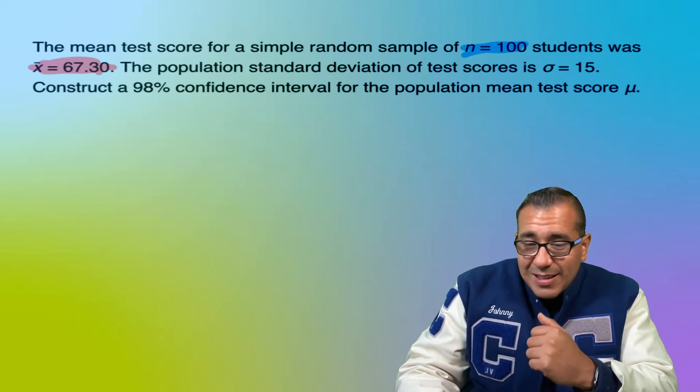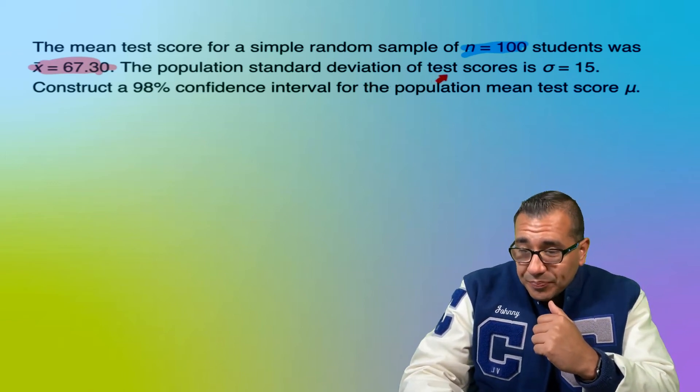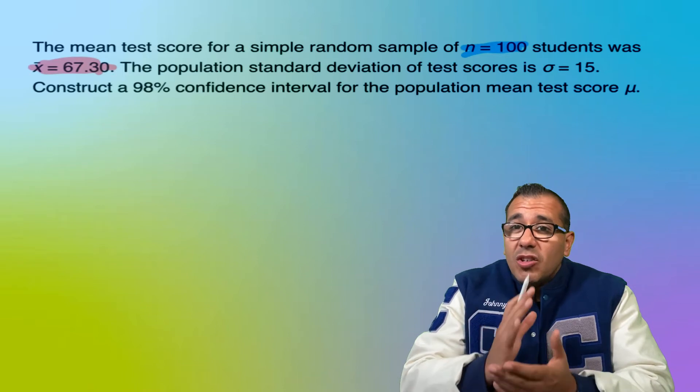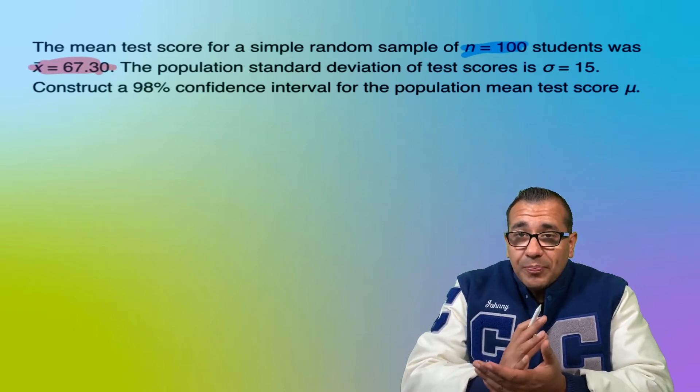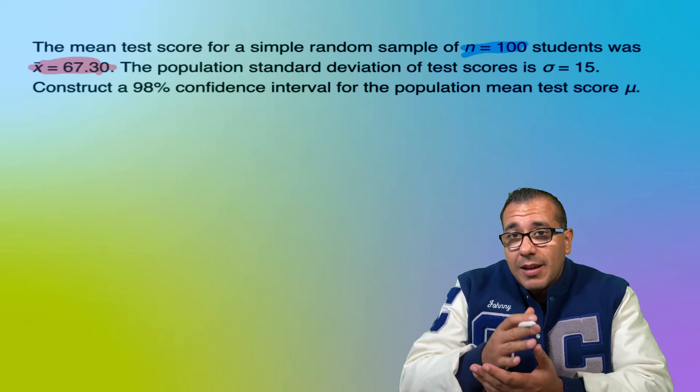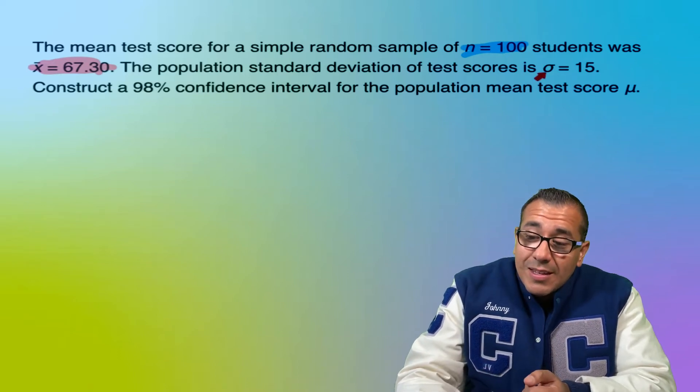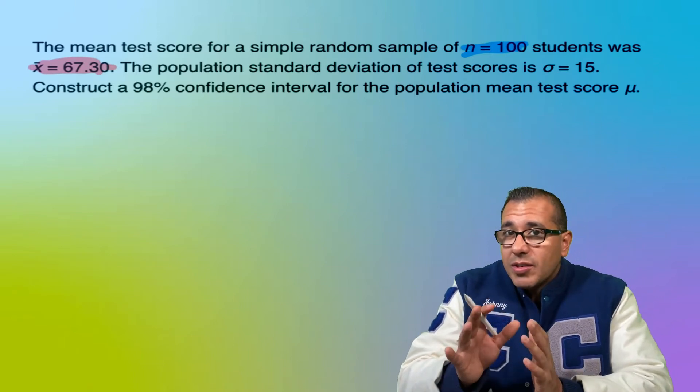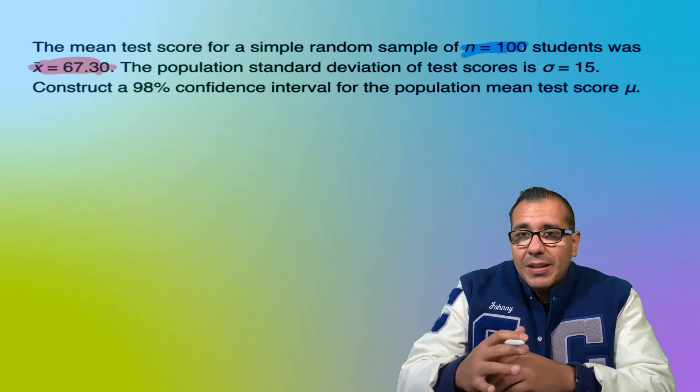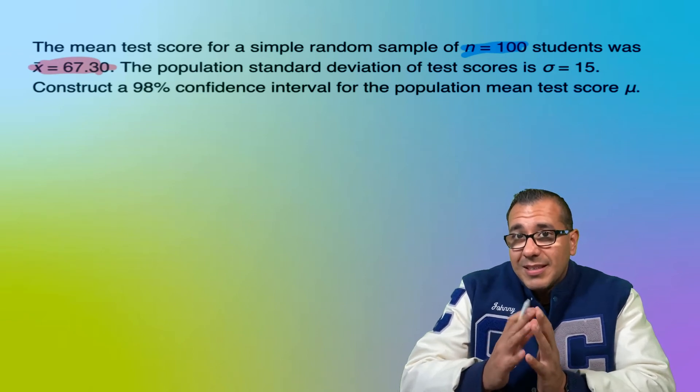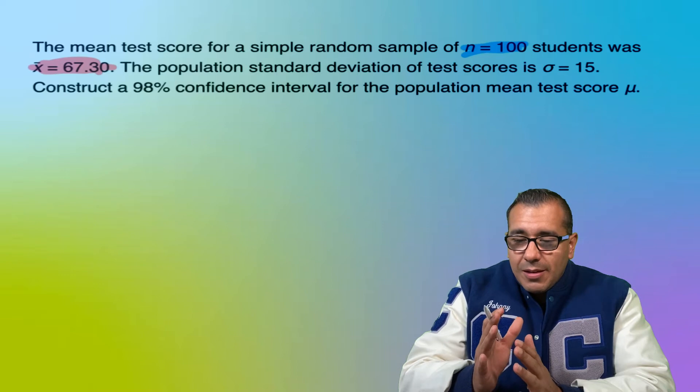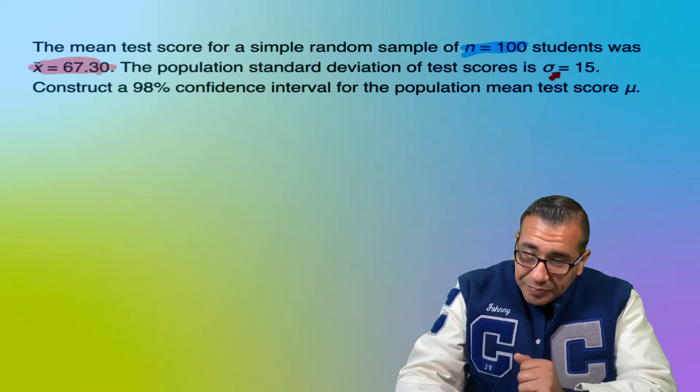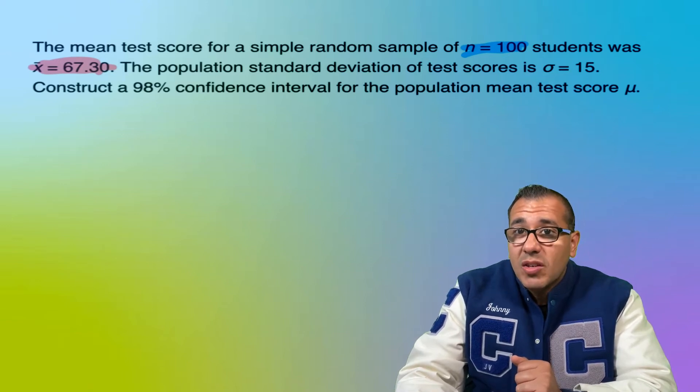So next, they tell us that the population standard deviation of test scores is σ = 15. So we're going to use this program Z interval that I'm going to walk you through on my calculator here, because this standard deviation comes from the population. In future sections, you're going to see that you're going to use a different interval called T interval. And the answer to when do I know when to use what program is going to lie depending on what type of standard deviation that you're given.